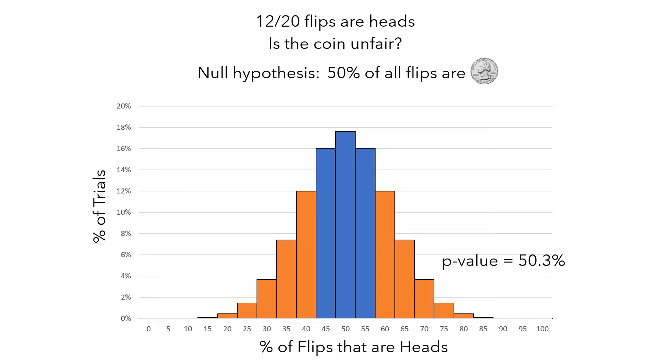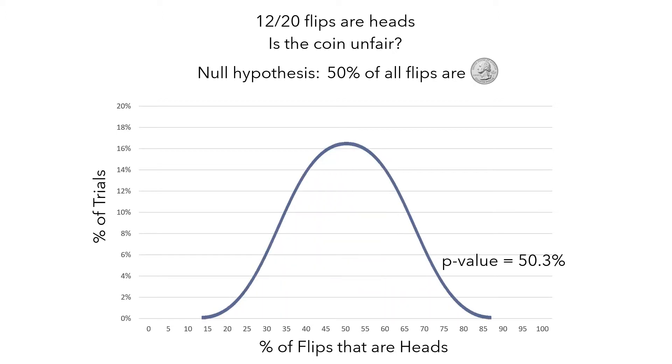But the central limit theorem tells us that if our sample size is large enough, our sampling distribution can be approximated by a normal distribution, where the center is at 50% and the standard deviation is the population standard deviation divided by, in this case, the square root of 20.